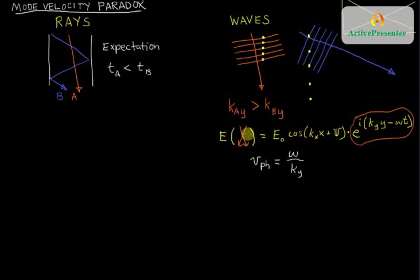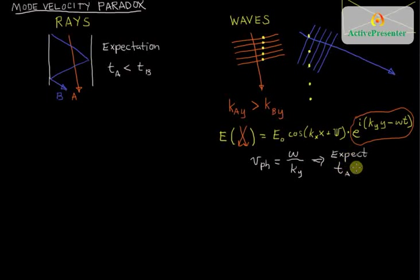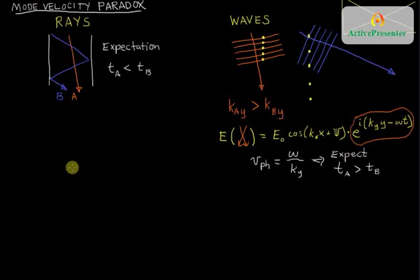It is true that since beam A has a larger k_y, and k_y is in the denominator, beam A has a smaller phase advance. The more tilted the two waves are that create the standing wave pattern — like the more extreme beam B — the faster its phase advance. So there's our paradox. We now expect T_A > T_B: it takes longer for beam A's standing wave pattern to drift down the waveguide, while beam B's more highly angled pattern would drift down faster, making T_B the smaller time.